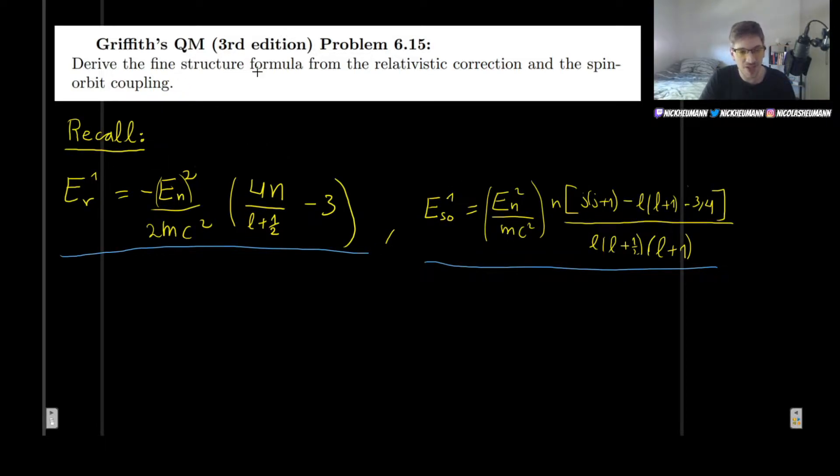So what we want to do here is derive the fine structure formula, and what that means is that we want to combine these two results. So we want to find the energy levels for the fine structure in general, and what this means is we want to add together the relativistic term and the term for the spin-orbit.